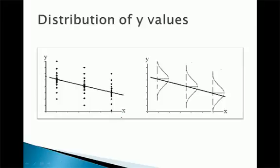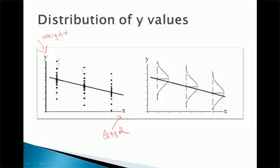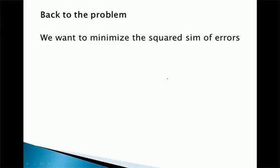This is just showing how y values are distributed. For alligators, x is the length, so for each length we could have multiple weights, because two alligators can have the same length but different weights. That's why you see this sort of picture — our assumption is that these y's are around the mean, which is beta 0 plus beta 1 times x_i. A few are further away from the mean, but most are around it. That's how the normal distribution works.